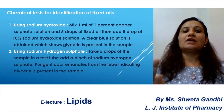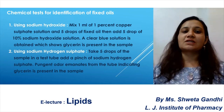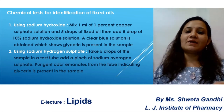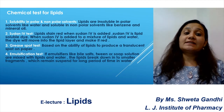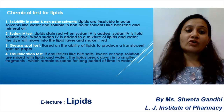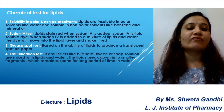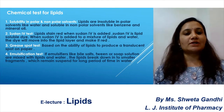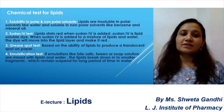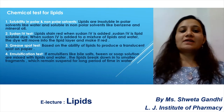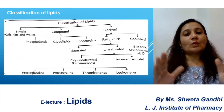The two main chemical tests for fixed oil are the sodium hydroxide test and the sodium hydrogen sulfate test. You can identify fixed oil using either of these tests. For the chemical test of lipids, we can use the Sudan food test, the spot test, and the emulsification test.